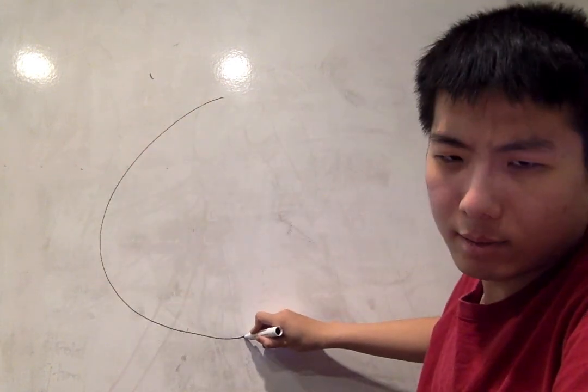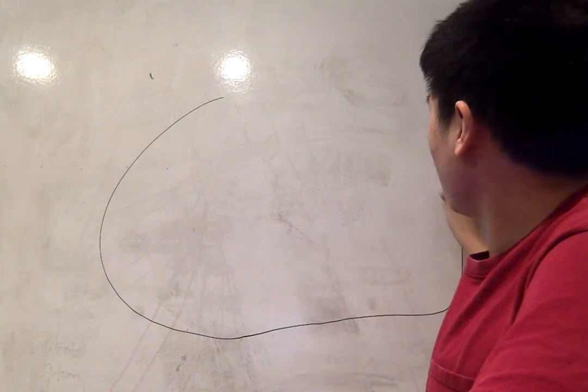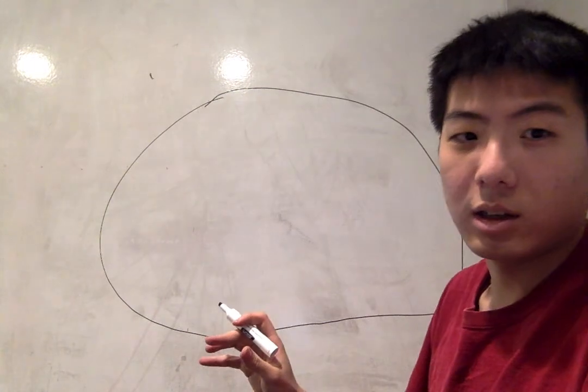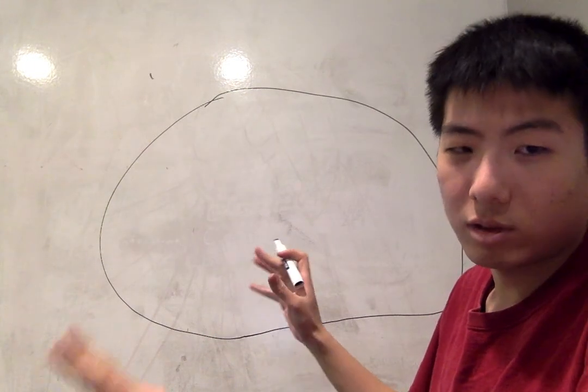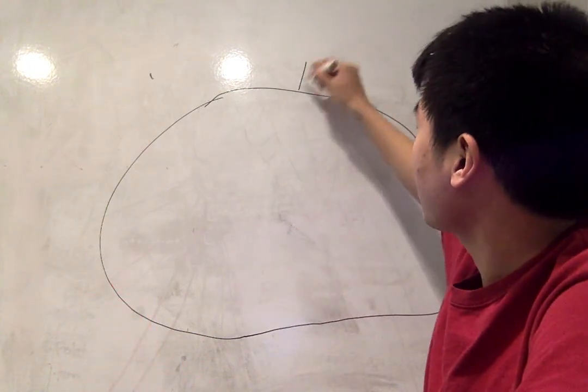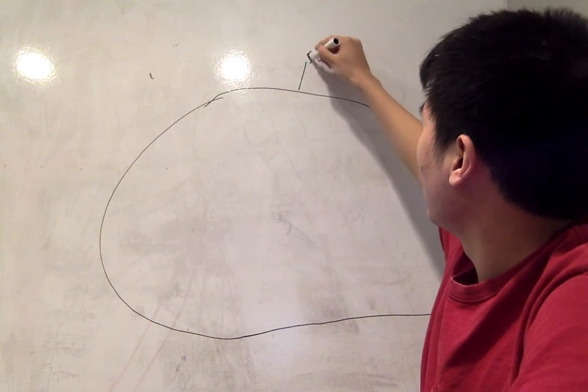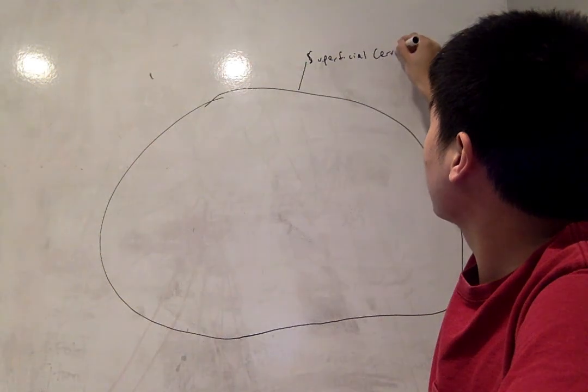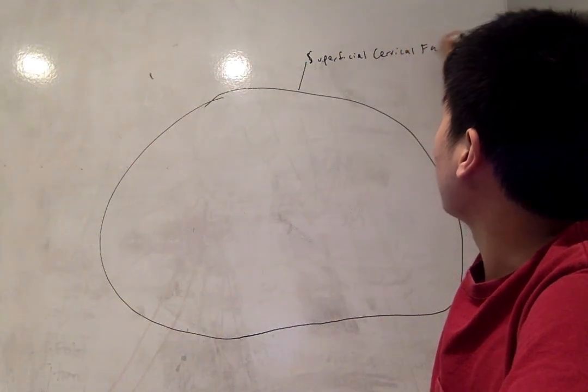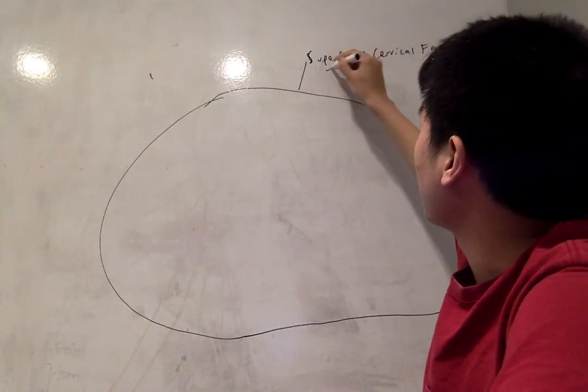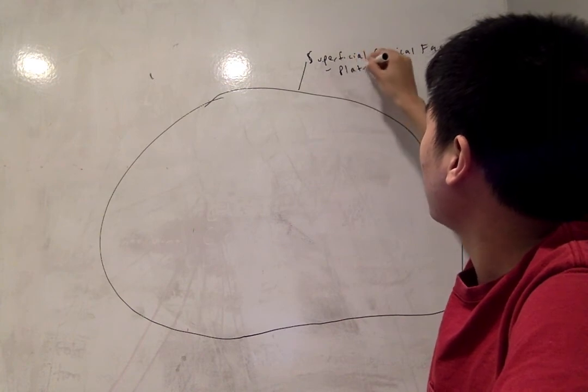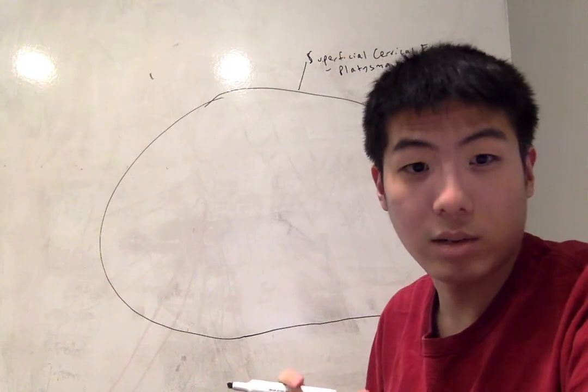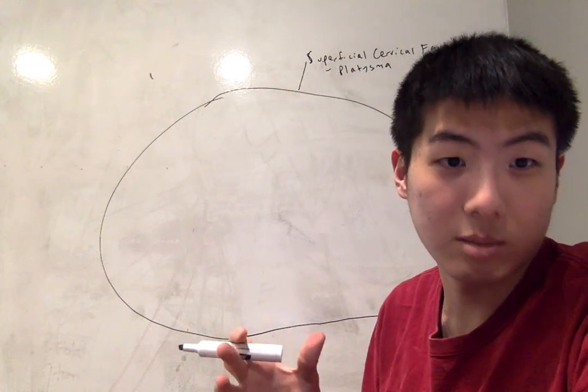The very outside of the neck, which I'll just draw as this big circle, is going to be the superficial cervical fascia. All you really need to know is that this layer has the platysma muscle, which is one of the muscles of facial expression responsible for grimacing.